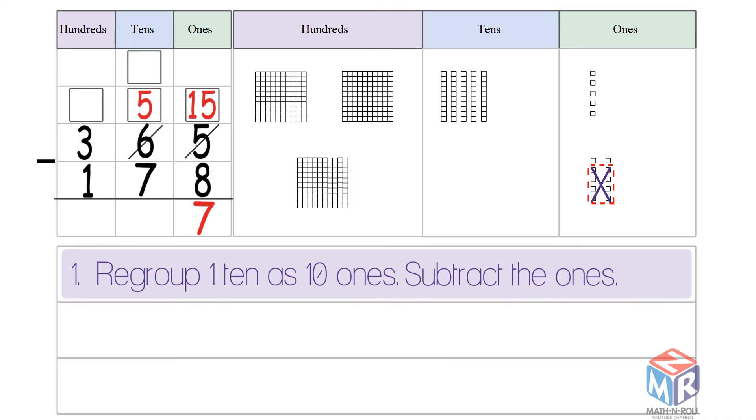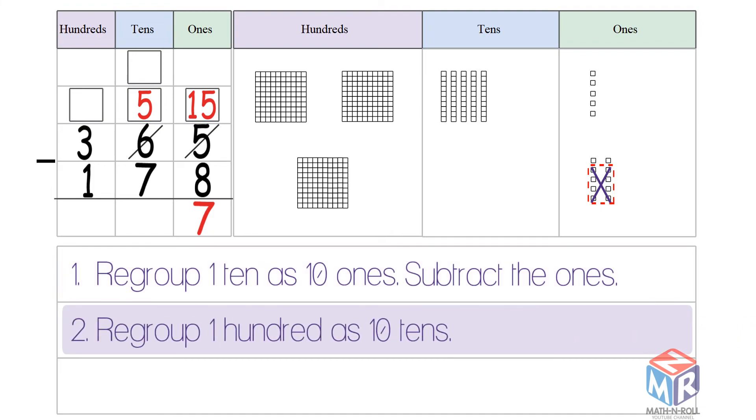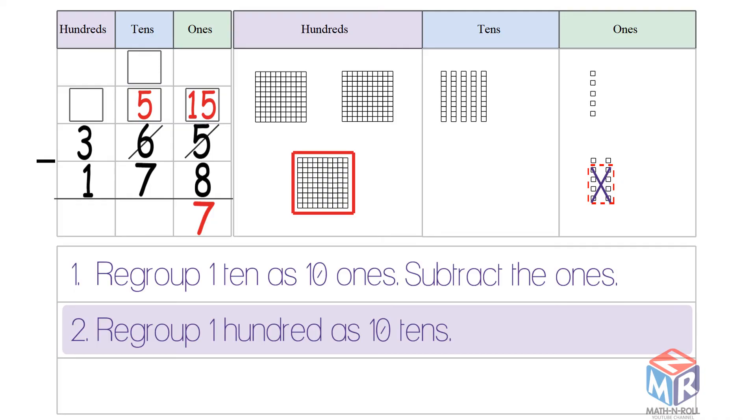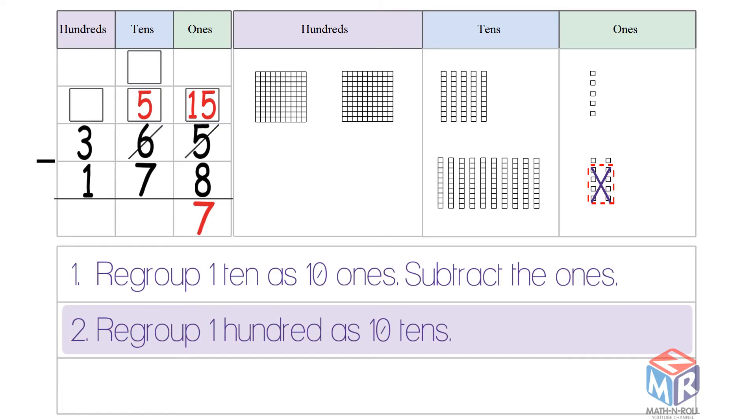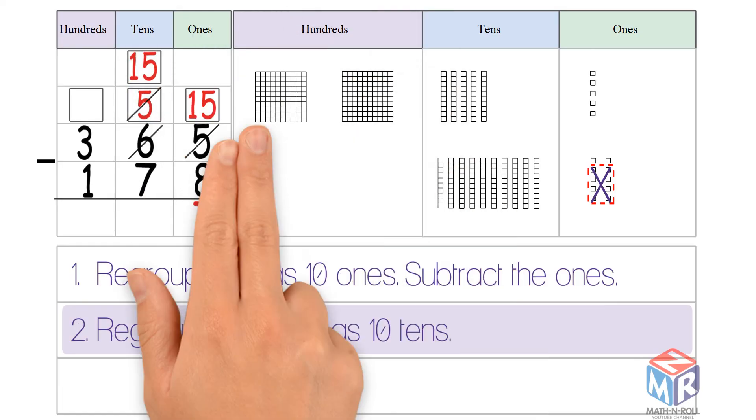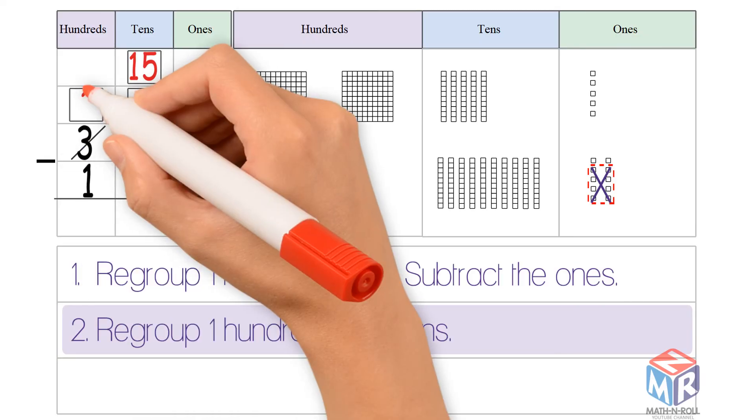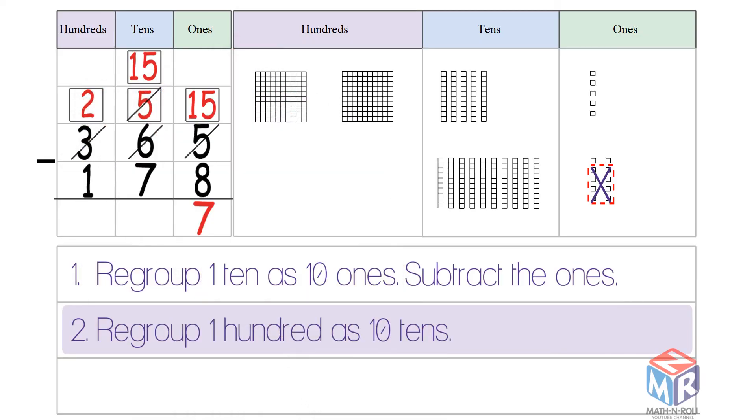Do you have enough tens to subtract 7 from 5? No. So we regroup 100 as 10 tens. Now we have 15 tens. 15 minus 7 is equal to 8.